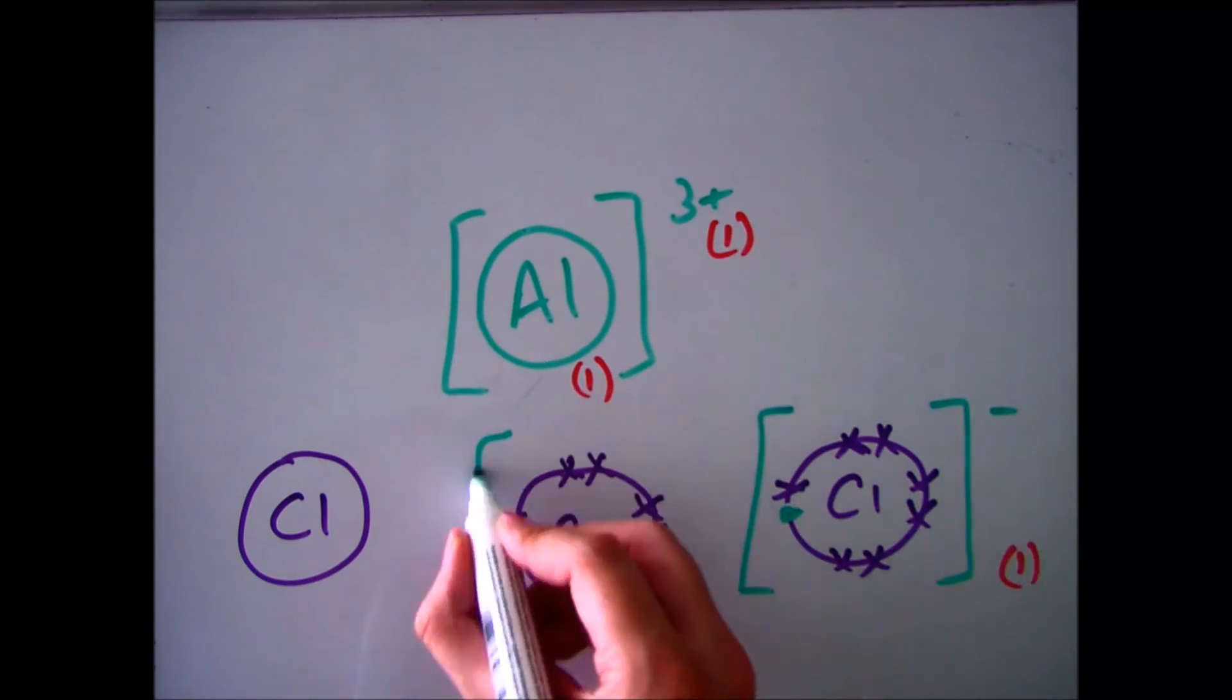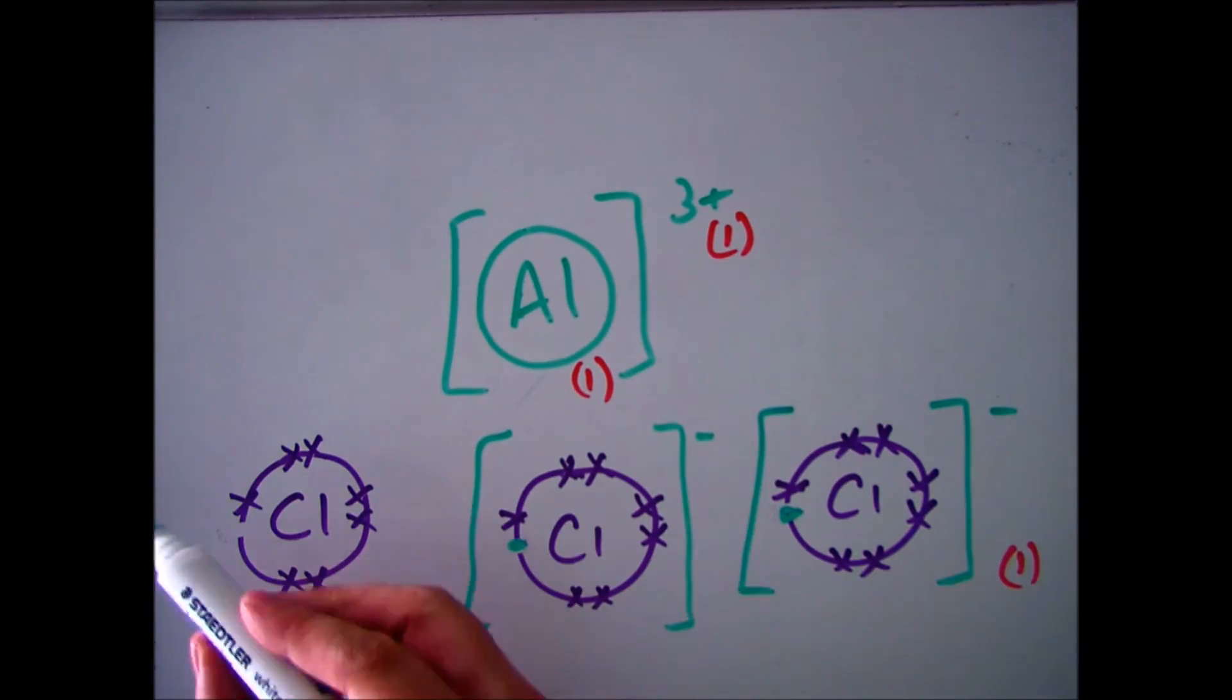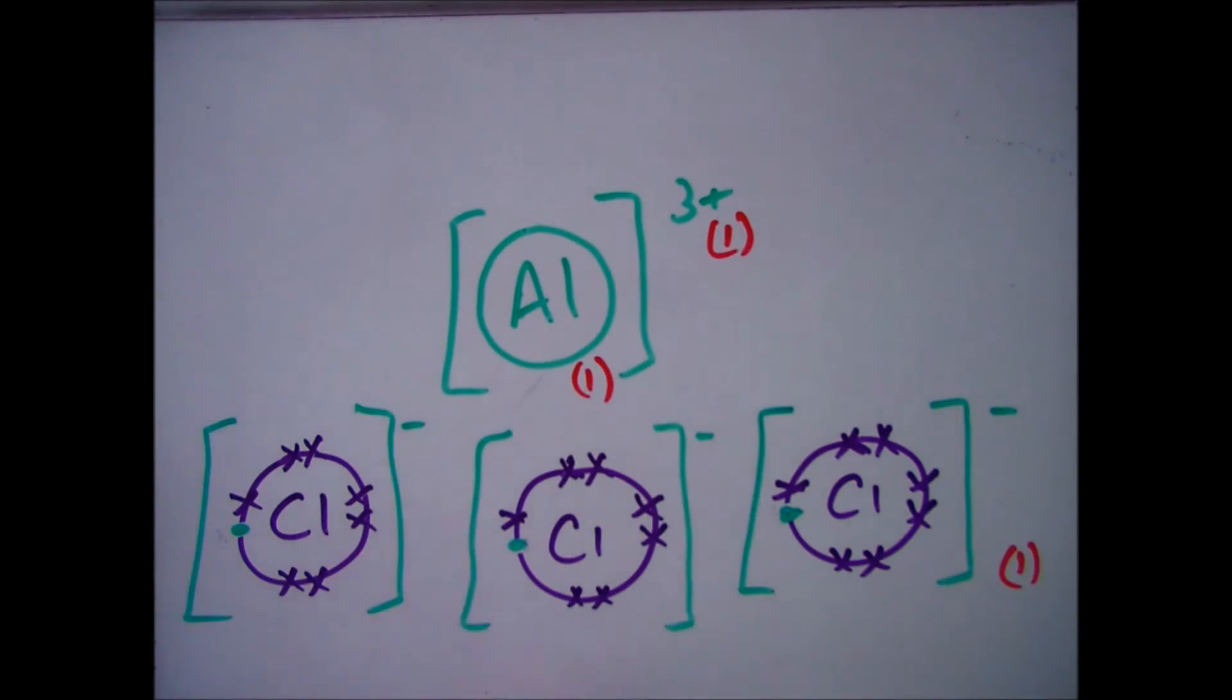And then finally, you just need to do the same thing for the other two, so the final mark is making sure that everything else is correct. So that will give you the overall formula, as we said previously, of AlCl3.